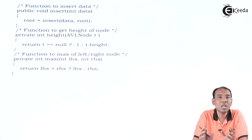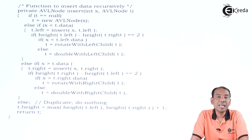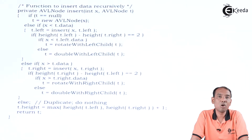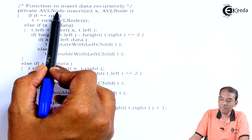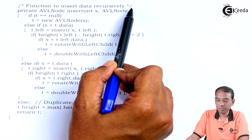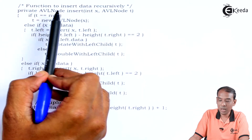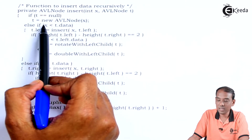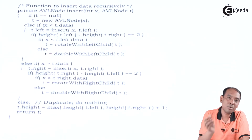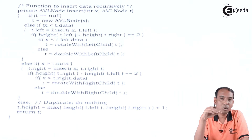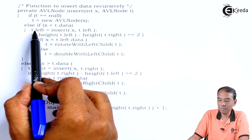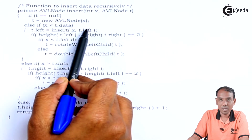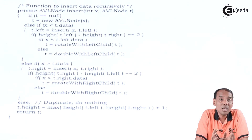Now we look at the private insert function that ensures every node's balancing factor stays -1, +1, or 0. We have private AVLNode insert(x, AVLNode t). We check: if t == null, create a new AVLNode with value x. Else if x is less than t.data, we move to the left: t.left = insert(x, t.left). Then we check the balancing factor — if height(t.left) minus height(t.right) equals 2, a rotation is needed.